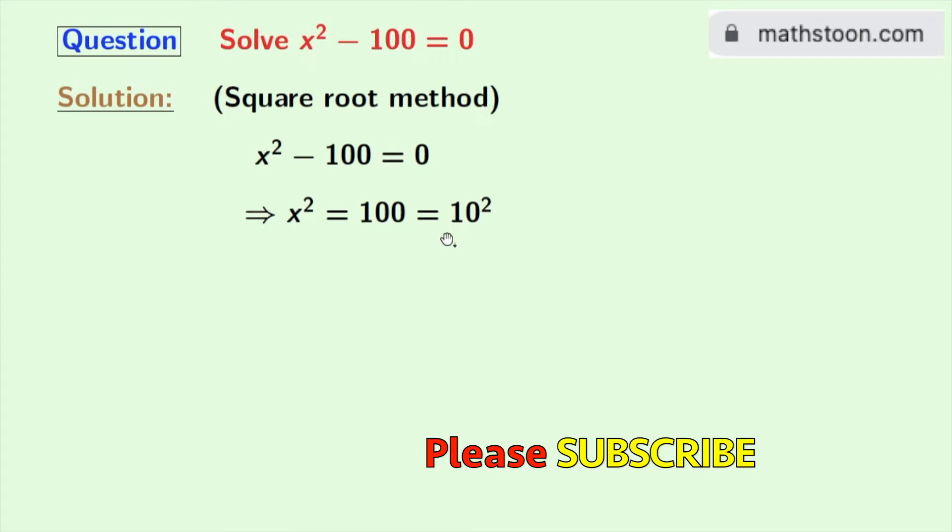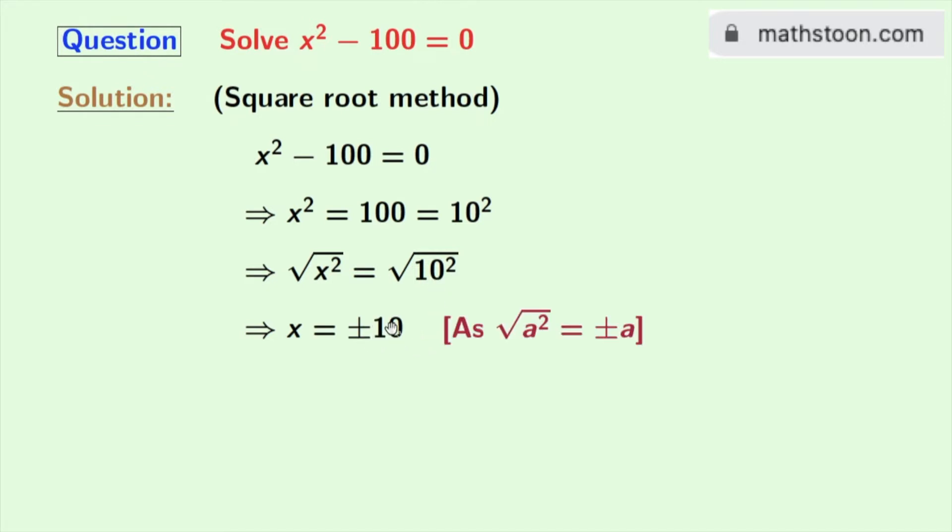Now we will take square root on both sides and doing so we get square root of x squared equals square root of 10 squared. In the left hand side we get x and in the right hand side we get plus minus 10 using the rule that square root of a squared equals plus minus a. Here a is 10.